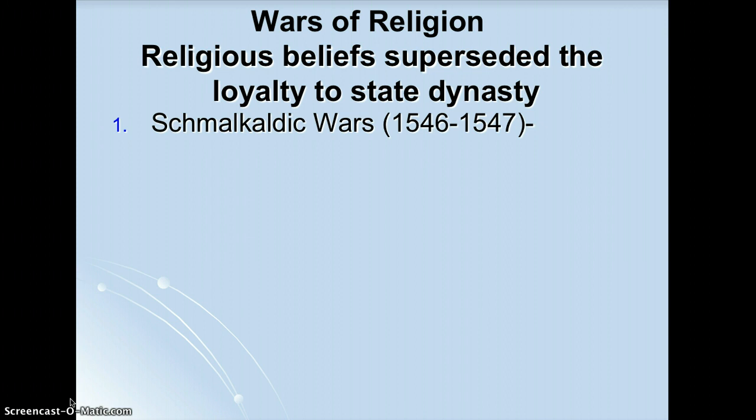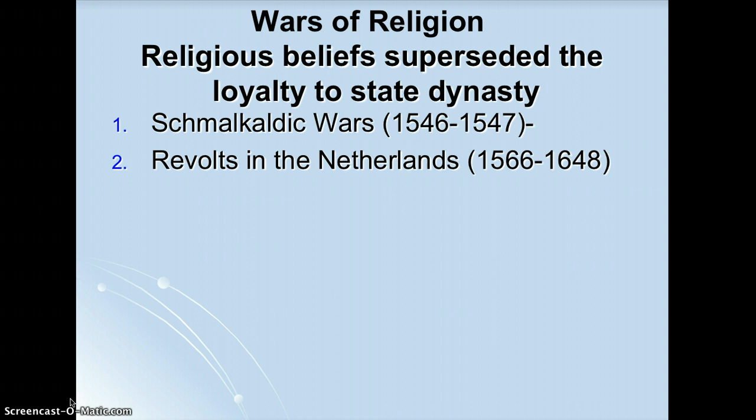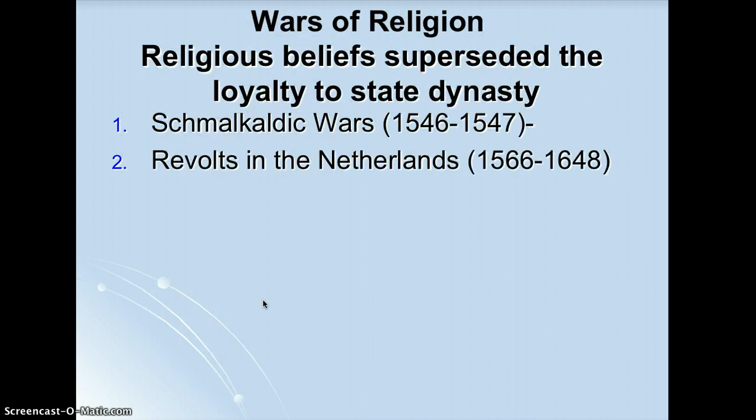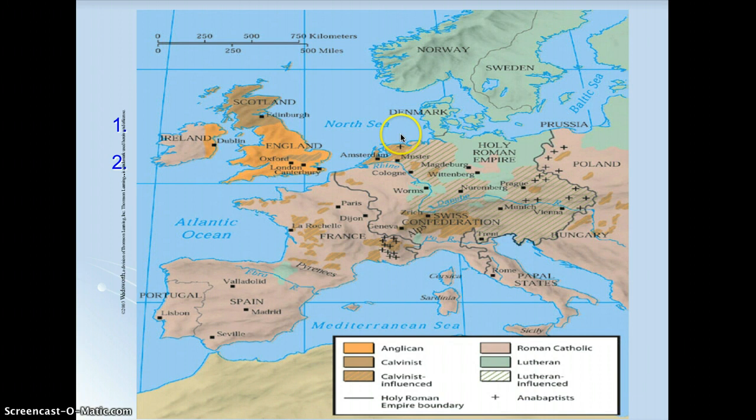The second religious war is the revolt in the Netherlands. Philip the Second was the leader of Spain. Philip ruled the low countries — the Netherlands area — as well as Spain, the southern part of Italy near the papal states, and the New World. The Netherlands is divided roughly half Protestant and half Catholic, and if you look at the map you can see stripes and different colors — there are even some Anabaptists in this part of the low countries.